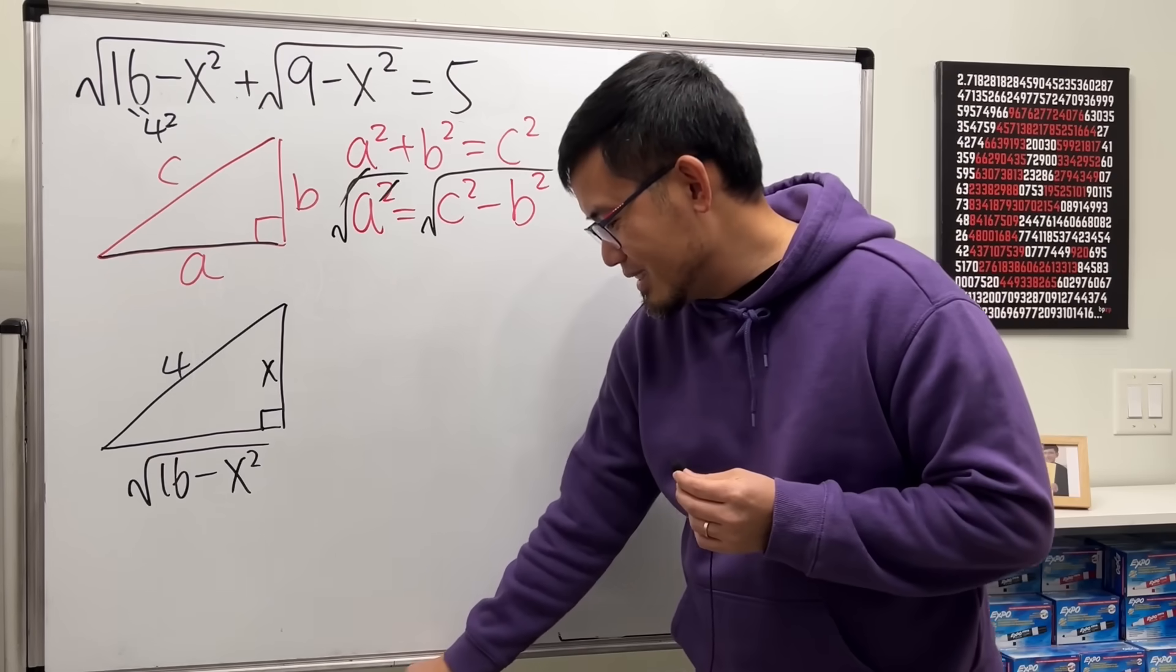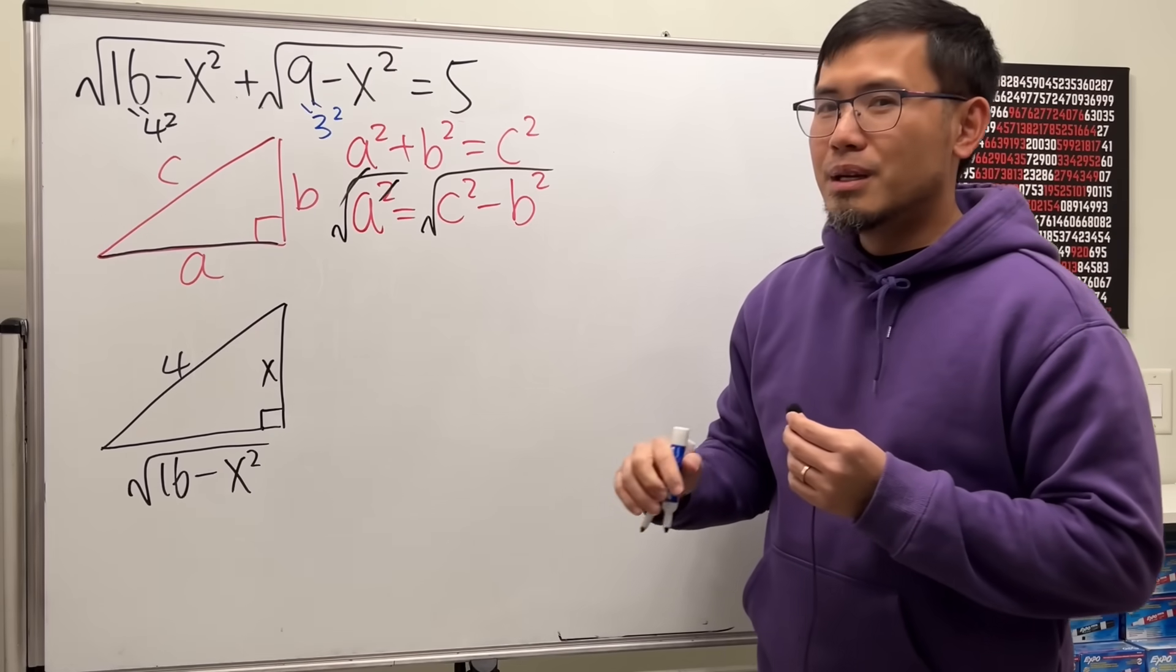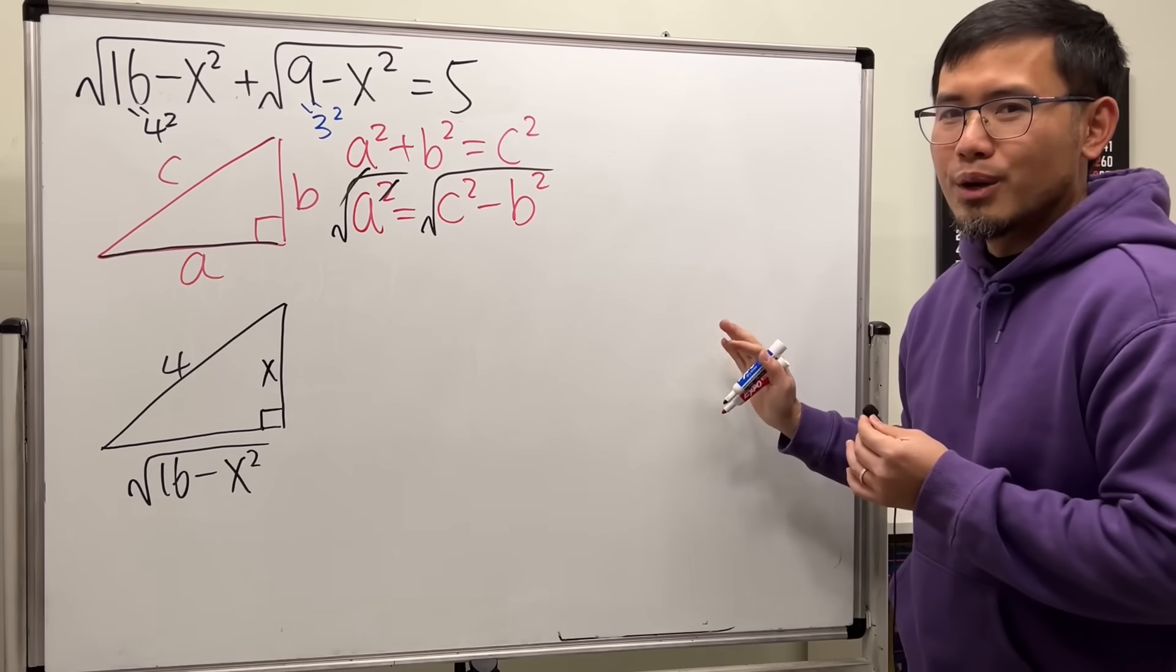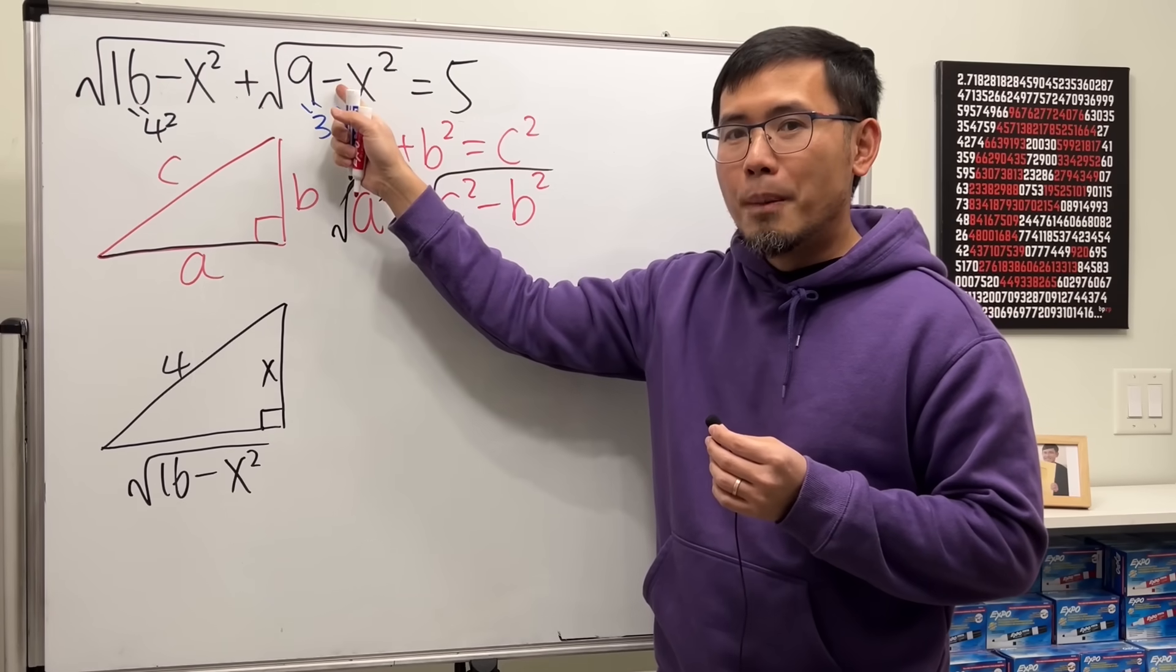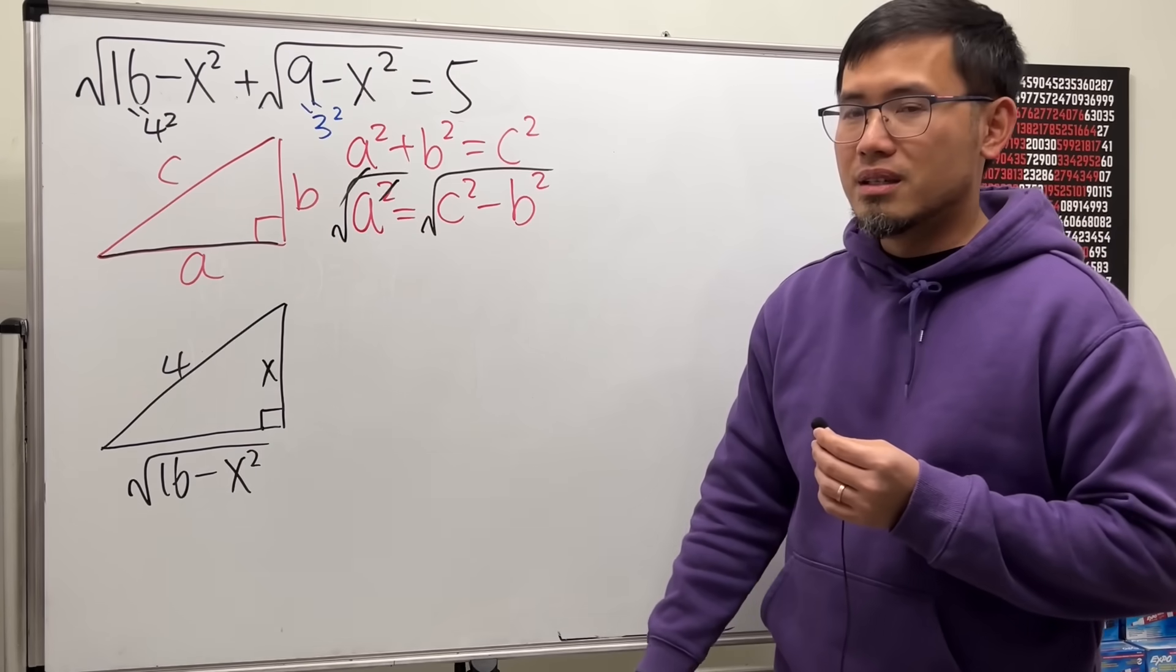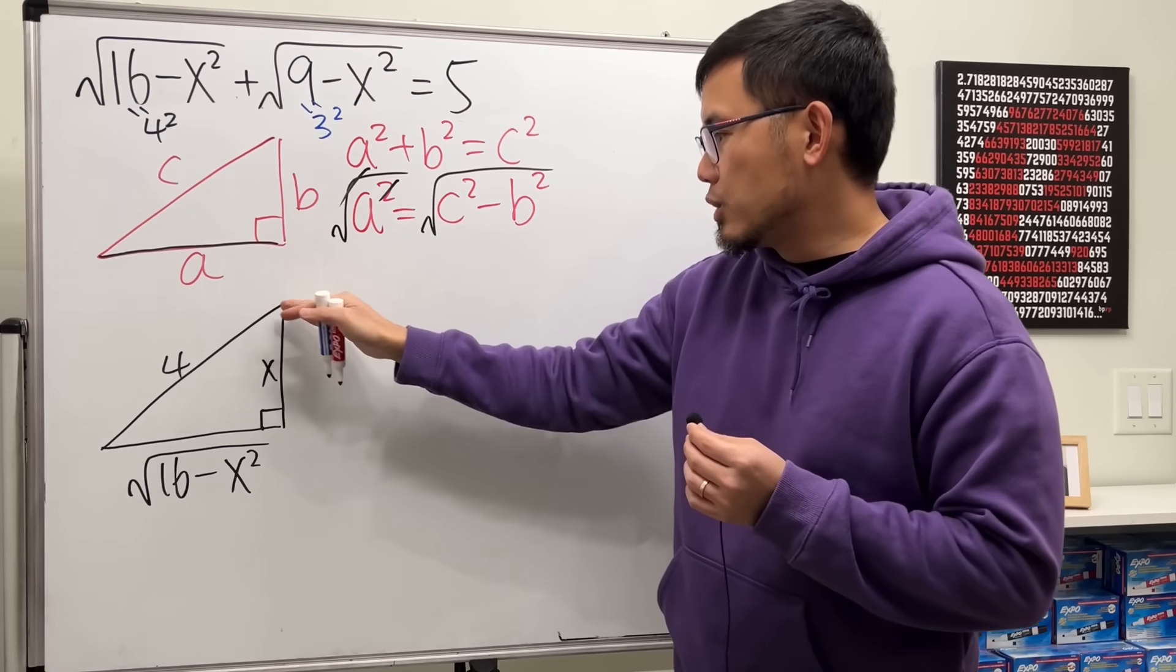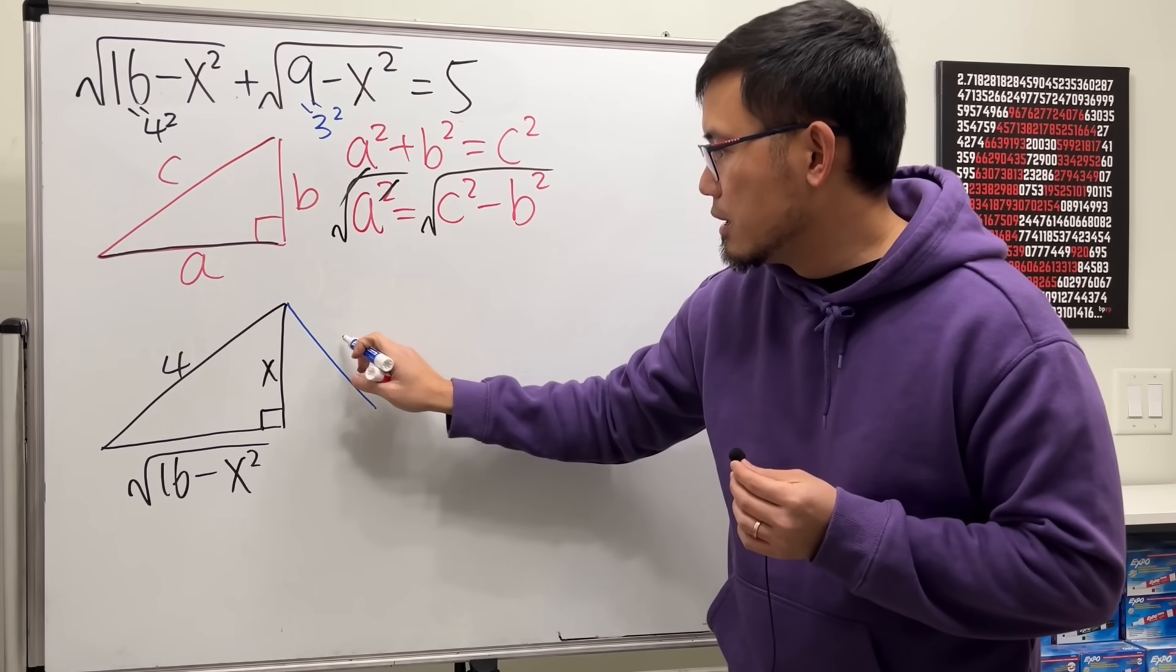Now, for the second part, we can also do the same thing. This is the same as 3 squared, but don't draw another triangle on the side somewhere. Because this right here has also minus x squared. Let's put it together. The 3 is the hypotenuse, but let's go like this. So let's go like this. That's 3.